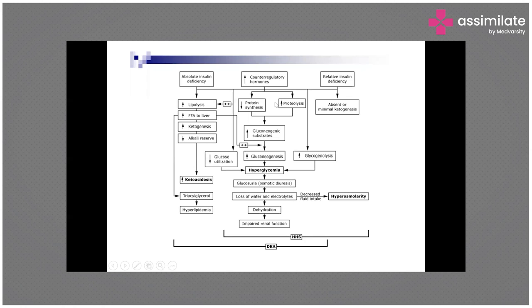When insulin levels may be normal, counter-regulatory hormones like growth hormones, steroids, or catecholamines — especially in patients with tachycardia, anxiety, or high catecholamine levels such as with pheochromocytoma — excess catecholamines will inhibit the action of insulin. As a result, there will be decreased protein synthesis, proteins will be broken down to produce more and more glucose through gluconeogenesis, resulting in high glucose levels.